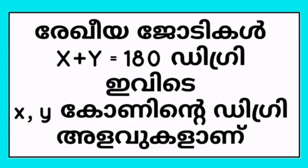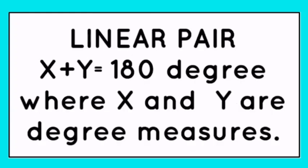For a linear pair, we use x plus y. The algebraic expression for a linear pair is: x + y = 180 degrees, where x and y are the degree measures of the two angles. For complementary angles: x + y = 90 degrees.